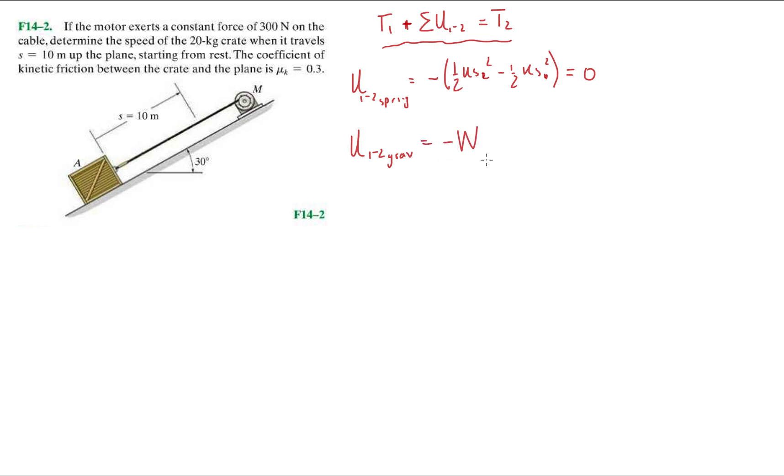Let's do work done by gravity. Work done by gravity is given to us as U_gravity = -W·Δy. The motor is exerting a force of 300 newtons on the cable. We need to determine the speed of the 20 kilogram crate when it travels s = 10 meters up the plane. Because it's traveling up the plane, it is changing its position in the y direction as well as in the x direction. We need to know what this total elevation change is—that'll be our Δy.